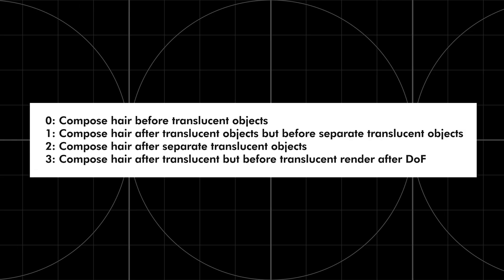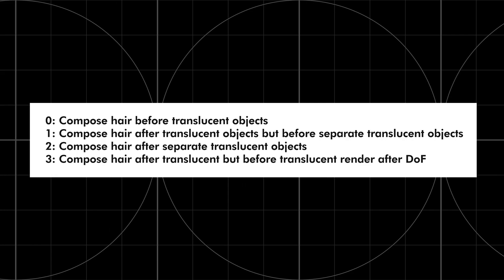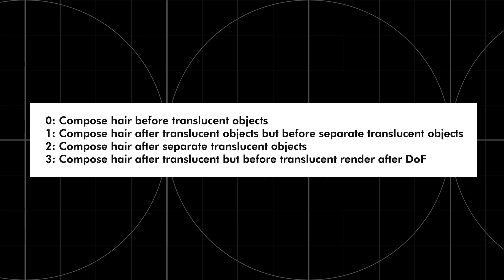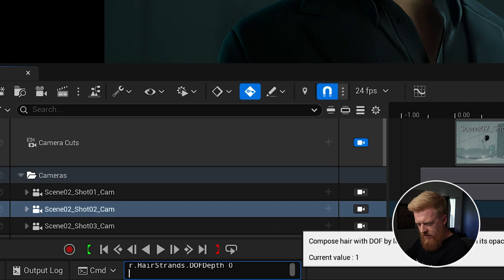You notice we set it to a value of two, but there might be some instances where you want to set it to a different value. There are actually four different options for how you can render the hair — you can use zero, one, two, or three for the value in the console command, and each one has a different order for how it renders the hair. I found that using a value of two fixed it in this scenario, but it might be different for your situation. So let's go ahead and copy and paste those commands in here.